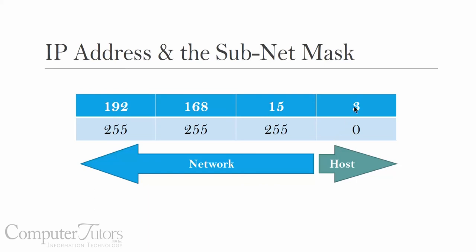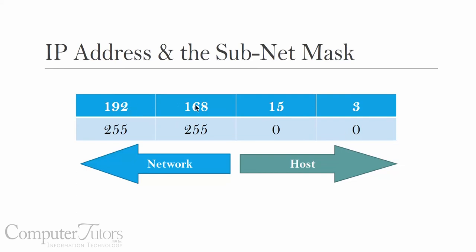So in this example, the host number is 3 and the network address is 192.168.15. In this next example, notice that I changed the subnet mask to 255.255.0.0. So this network address is 192.168, but this time the computer's IP address — the host address — is 15.3. So this is the 192.168 network with a computer identified as 15.3 on that network.